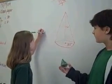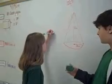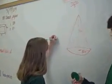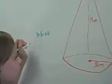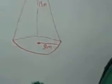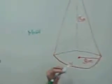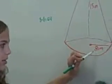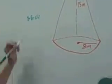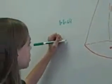8 times 8 is 64. We got that because the radius of the circle on the bottom is 8. And finding the area of a circle is radius times radius, times pi.